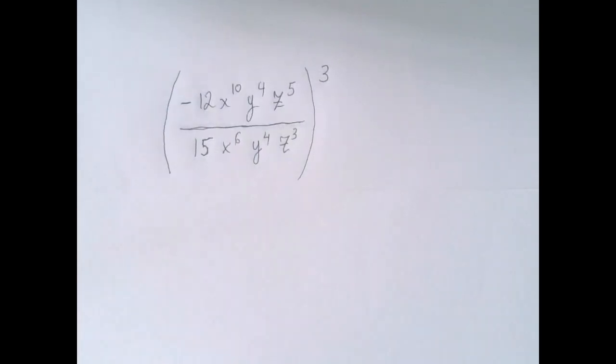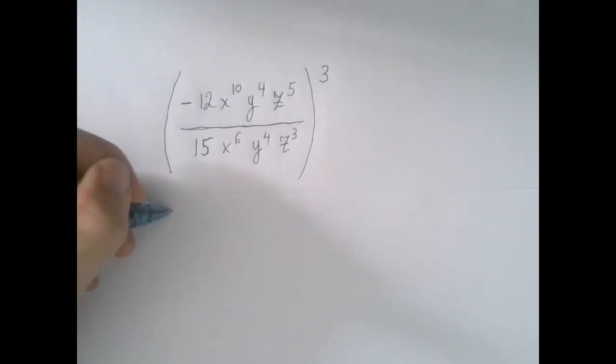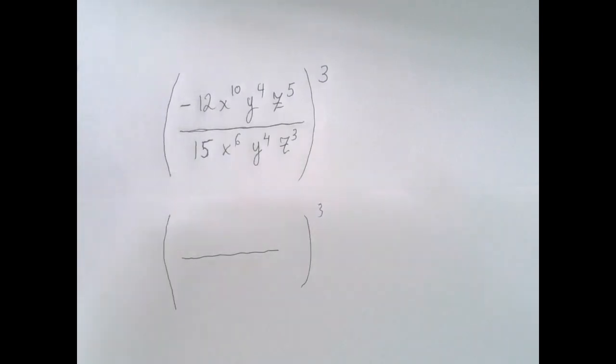Between negative 12 and 15, both of them are divisible by 3, so we can cancel that out. Negative 12 divided by 3 is negative 4, and 15 divided by 3 is 5.